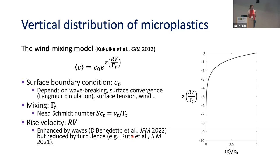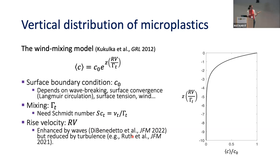Even with this really simple model, there are three important parameters we need. We need to know something about the surface boundary condition — which is now different from a bottom boundary layer of sediment — including processes like wave breaking, surface tension, and wind, as well as the local concentration. We need to know something about the mixing, i.e., what the diffusivity is. We also need to know the rise velocity: for small particles we can take their Stokes rise velocity, but that's not necessarily what they're actually rising with in an unsteady flow. In waves, we've shown that waves can actually enhance the rise velocity of particles, but turbulence can reduce it.